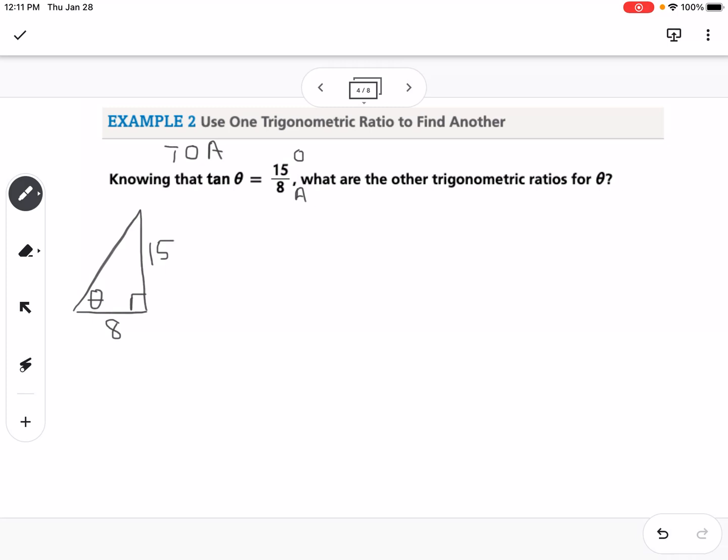When we have a right triangle and we know two of the three sides, we can use Pythagorean theorem. So a squared plus b squared equals c squared. It would be 15 squared plus 8 squared equals c squared. That would be 289 equals c squared, so we take the square root of that and we get 17. So our hypotenuse is 17.